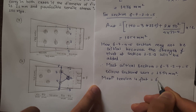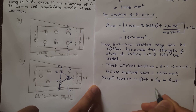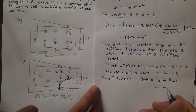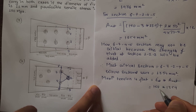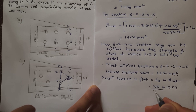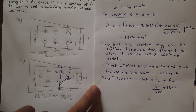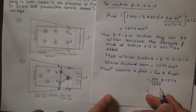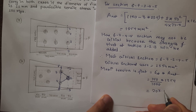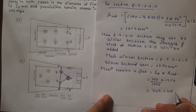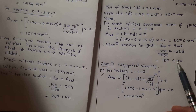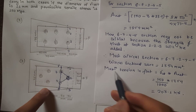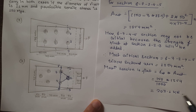Maximum tension in the flat for staggered riveting = σ_at × A_net = 150 N/mm² × 1354 mm² = 203,100 N = 203.1 kN. Summary: Chain riveting — maximum tension in flat = 185.4 kN. Staggered riveting — maximum tension in flat = 203.1 kN.